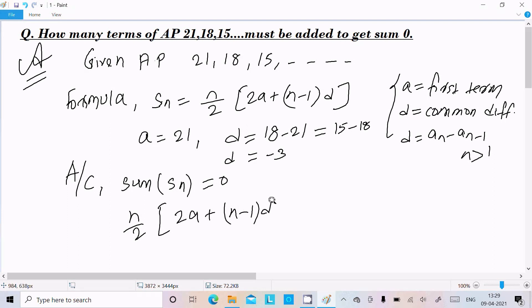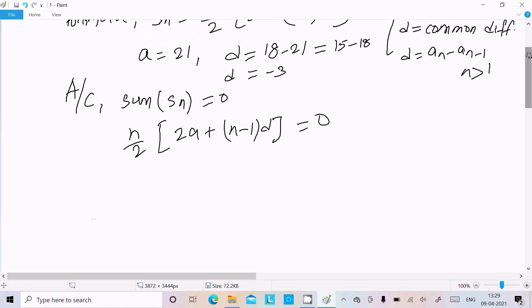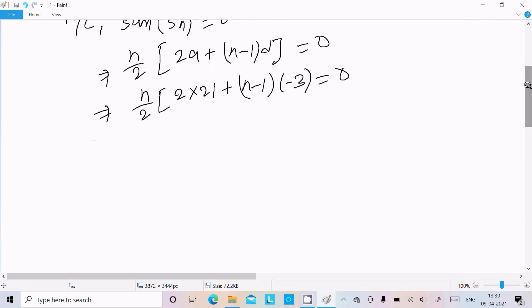Now from here, put the values. We don't know about the n, so here n we don't know, we need to calculate. a we know is 21, plus n we need to calculate, d is minus 3, equal to 0. Now solve this equation, you get the total number of n terms.